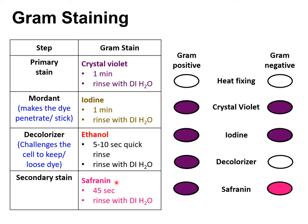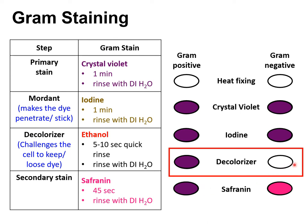The secondary dye we add is safranin. We add safranin and leave it over the smear for about 45 seconds, then rinse with water. Safranin is red in color. The bacteria that will accept the safranin are those that just lost the crystal violet — the gram negatives — those with a thin peptidoglycan layer. They will appear red under the microscope. The gram positives are already saturated with crystal violet, so they will remain purple under the microscope.